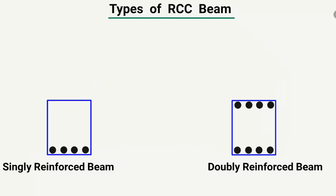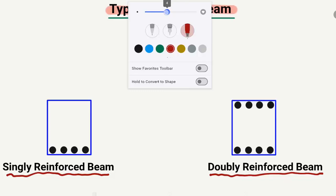Welcome back to the AC1 Engineering YouTube channel. Please subscribe for daily videos. Today we are going to discuss the types of reinforced cement concrete beams. There are basically two types of RCC beams based on reinforcement: one is known as the singly reinforced beam and one is known as the doubly reinforced beam.